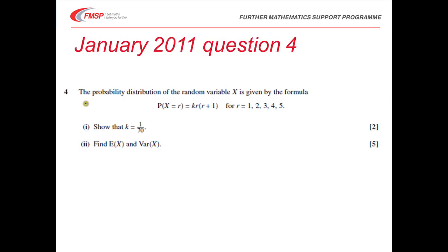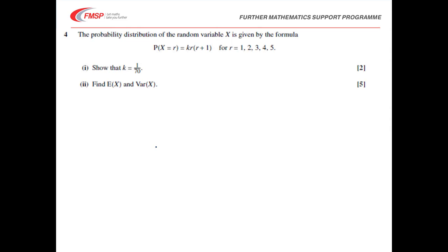To finish off, a question on discrete random variables. We've got a formula and five values of r. We've got to show the working to find k — basically checking that the probabilities add up to one — and then find the expectation and the variance. The key here is to set it out neatly in a table: first row is r, next row is the probabilities, then multiply each probability by r, then multiply by r squared. It's easiest to do all of this in one table at the beginning.